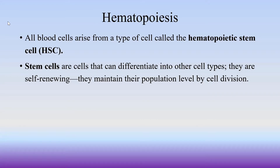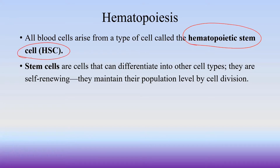Hematopoiesis. We will look at hematopoietic stem cells. A hematopoietic stem cell can give rise to many types of cells: white blood cells (WBC), red blood cells (RBC), and lymphocytes. That is what hematopoietic stem cells do.